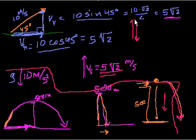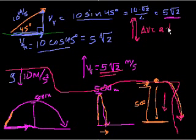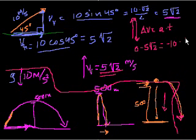The easiest way to think about it: the time it takes to go up equals the time to come down. So how long does it take to go up? The ball starts at 5√2 meters per second and at the top its speed is 0. Using the equation: change in velocity equals acceleration times time. Final velocity (0) minus initial velocity (5√2) equals acceleration (10 m/s²) times time.